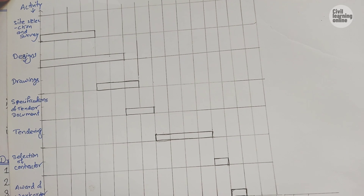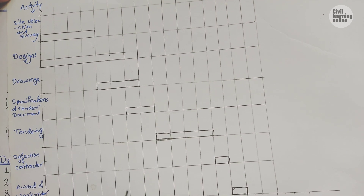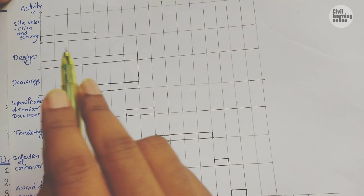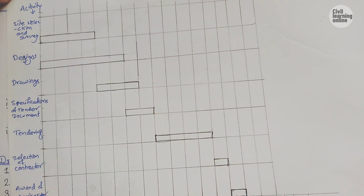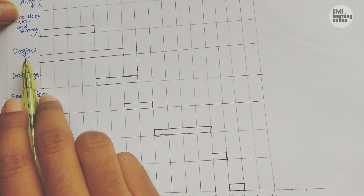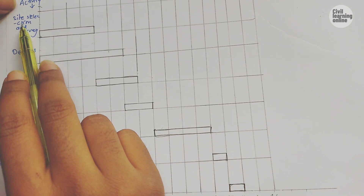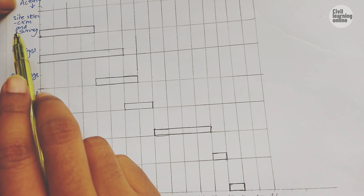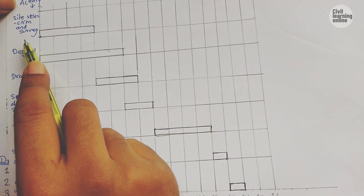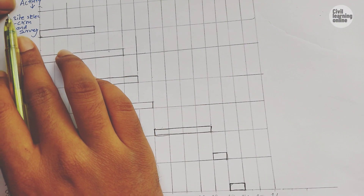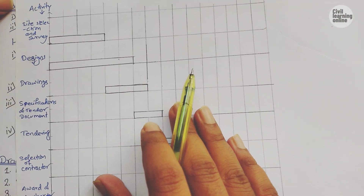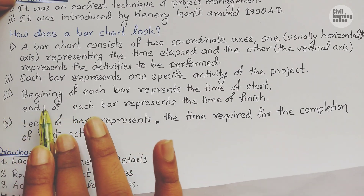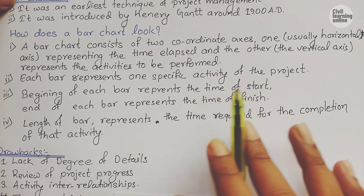For example, the time period is in weeks — first week, second week, third week. The line here represents the beginning of site selection survey, which is completed in the fourth week. For design, as you can see, two activities have a common starting point — they can be started together, because design is done in the office while site selection survey is done on site. So both can be commenced together.